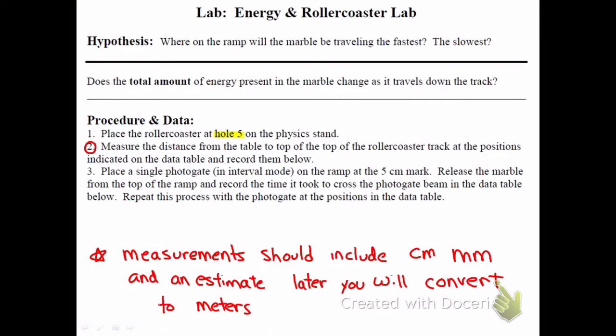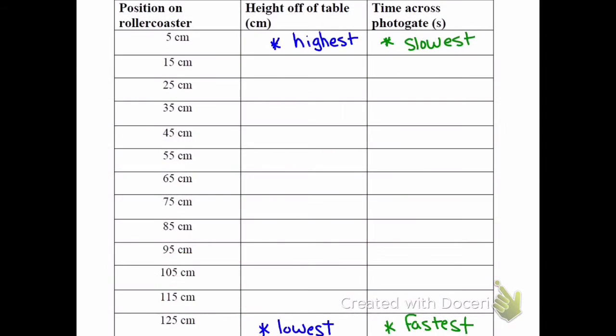Just a reminder that we took some measurements of the height of the roller coaster at different positions and we're going to need to be doing some conversions to these in this lab. So here's our data table. What we did was we dropped the marble and set the photo gate at different positions on the track. Some were higher, some were lower.